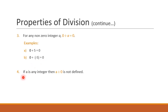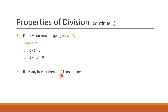Now let's see the next property. It says if a is any integer, then a divided by 0 is not defined. If I try to divide any integer by 0, the answer is not defined. We cannot divide any integer by 0.